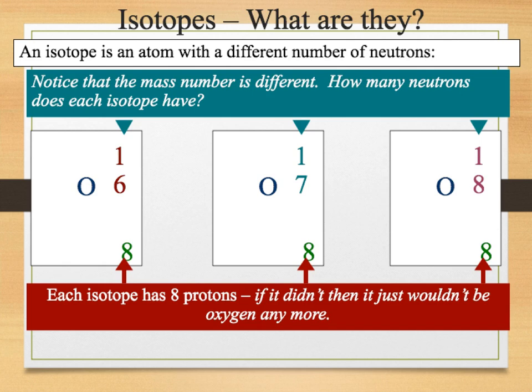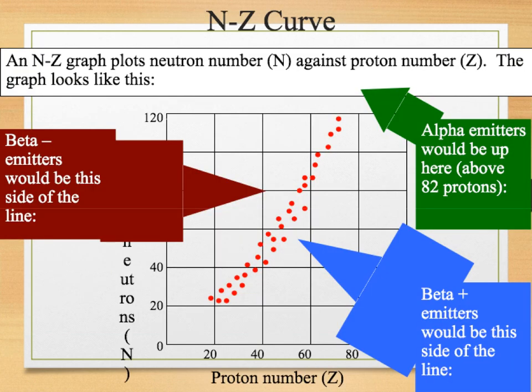If we plot the number of neutrons against the number of protons we can form an NZ curve. This is our stability graph — plotting the number of neutrons on the y-axis (N) against the proton number Z on the x-axis. The Z comes from the German word for proton. The graph produces a curve in the middle where all of our stable isotopes are found. The closer to the line you are, the more stable an isotope is.